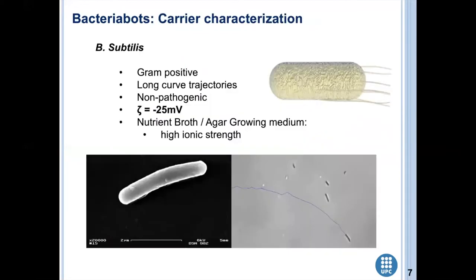We focus on the development of bacteria bots using non-pathogenic bacteria, like the ones part of our own microbiome. B. subtilis is a viable carrier. It's a gram-positive bacteria. When we describe the swimming behavior, it has long curved trajectories. It's non-pathogenic.